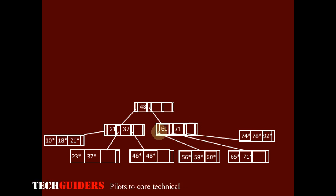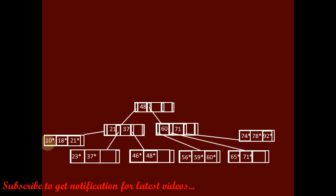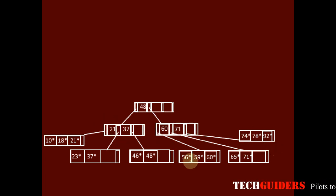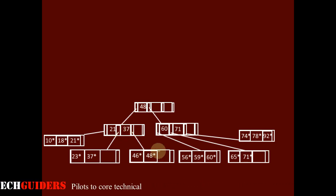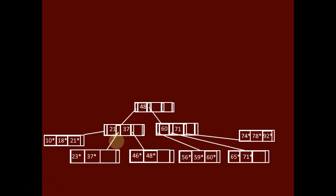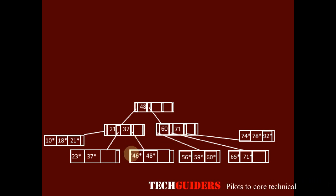This is the final B+ tree for the given insertion sequence. The tree is balanced, with all leaf nodes at the same level. The keys are sorted, and every key acting as a guide for search is the maximum from the keys on the leaf nodes of the left sub-tree. Every node satisfies the minimum fill and maximum fill conditions.